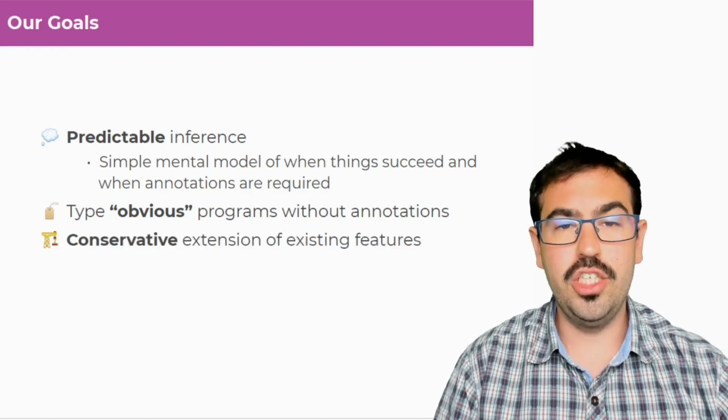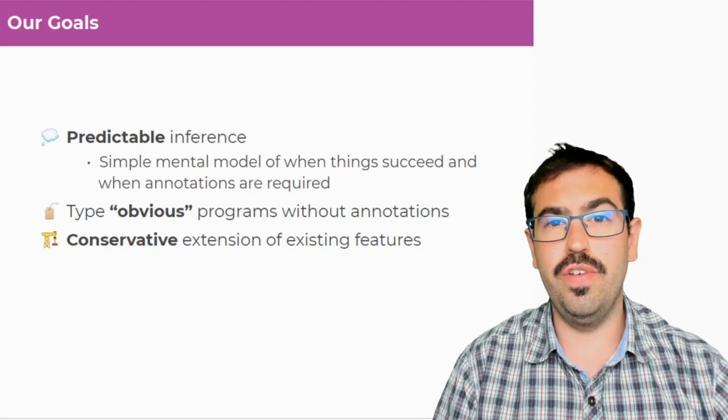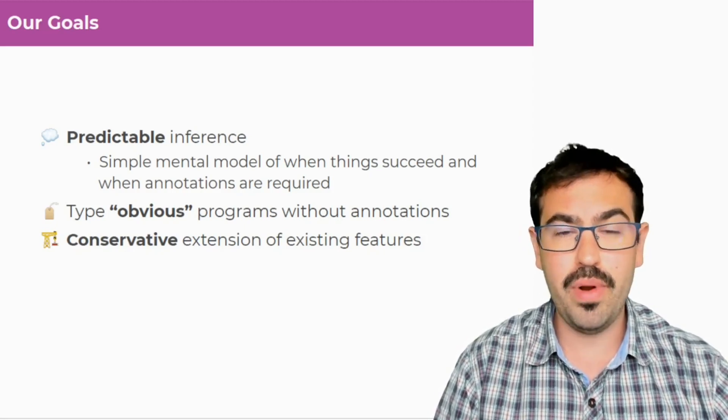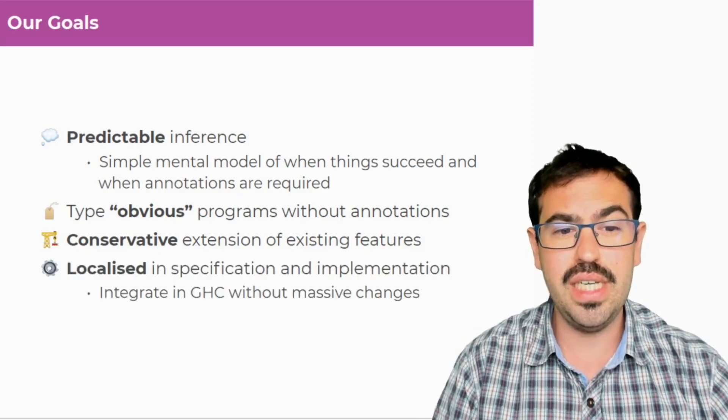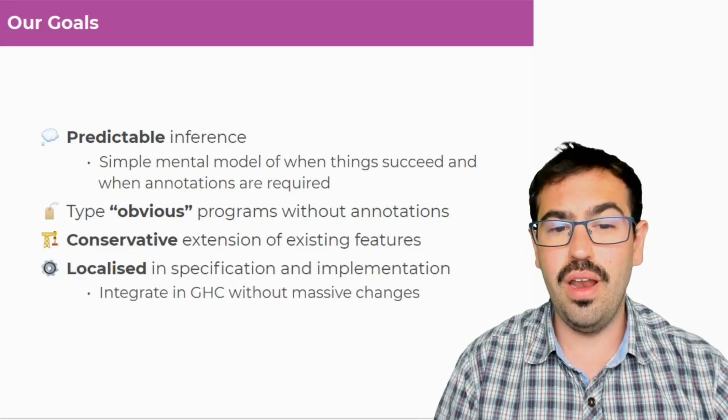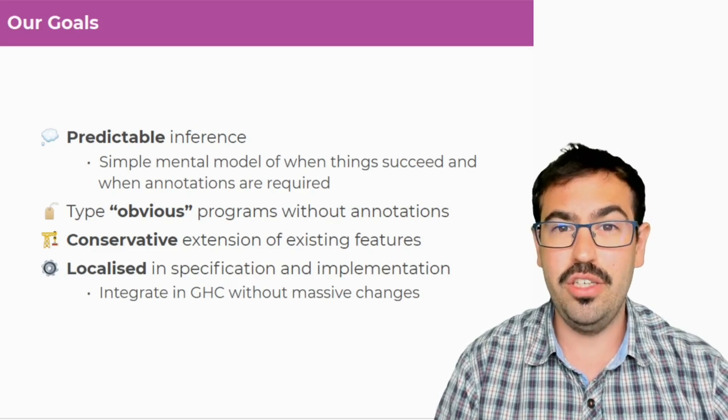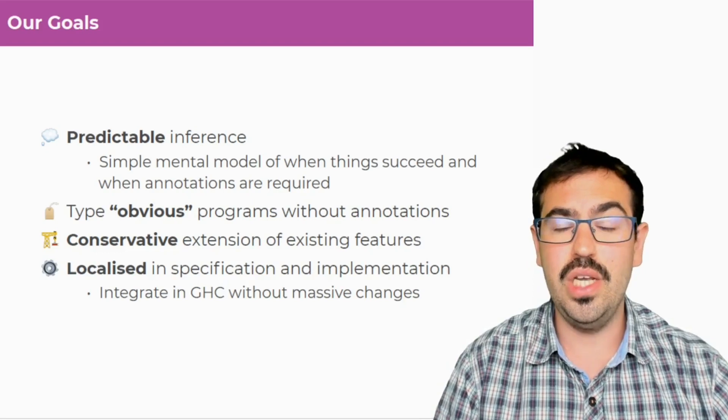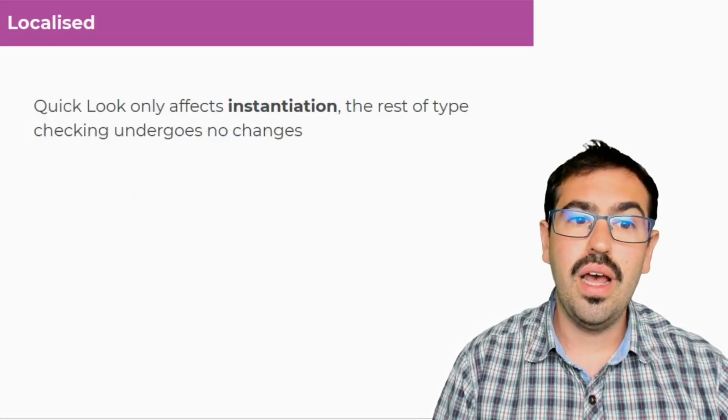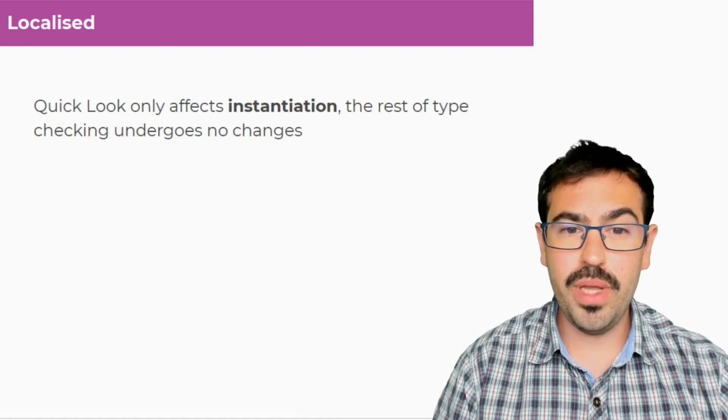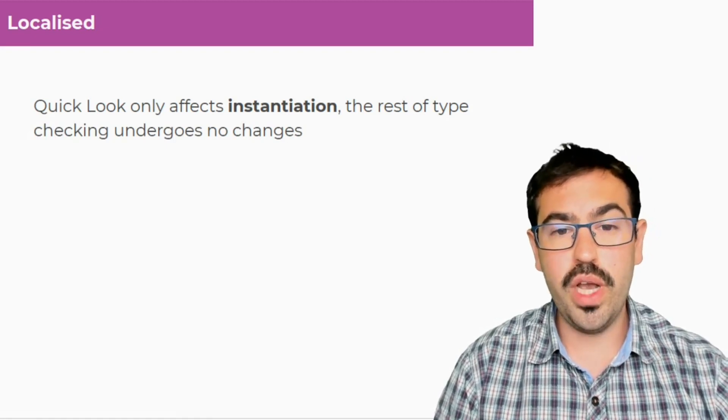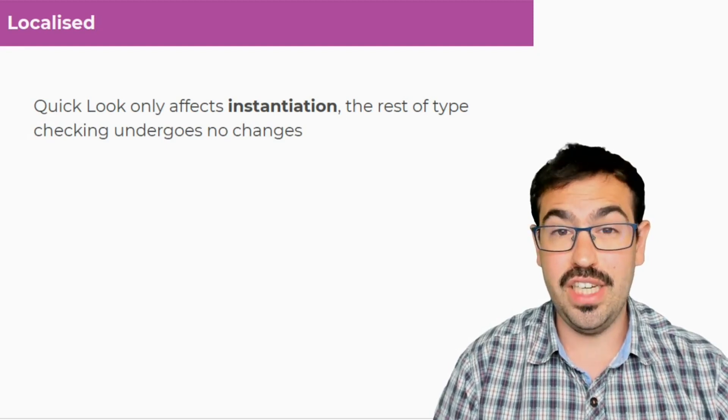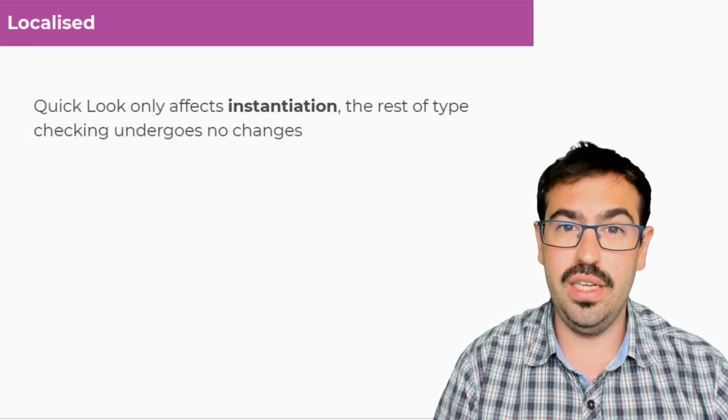The other goal we have is to be a conservative extension of existing features. So we want this thing to be compatible with type classes, type families, everything which is already into GHC, and also to be localized in specification and implementation. Because as I was saying, we want to implement this in GHC without massive changes.